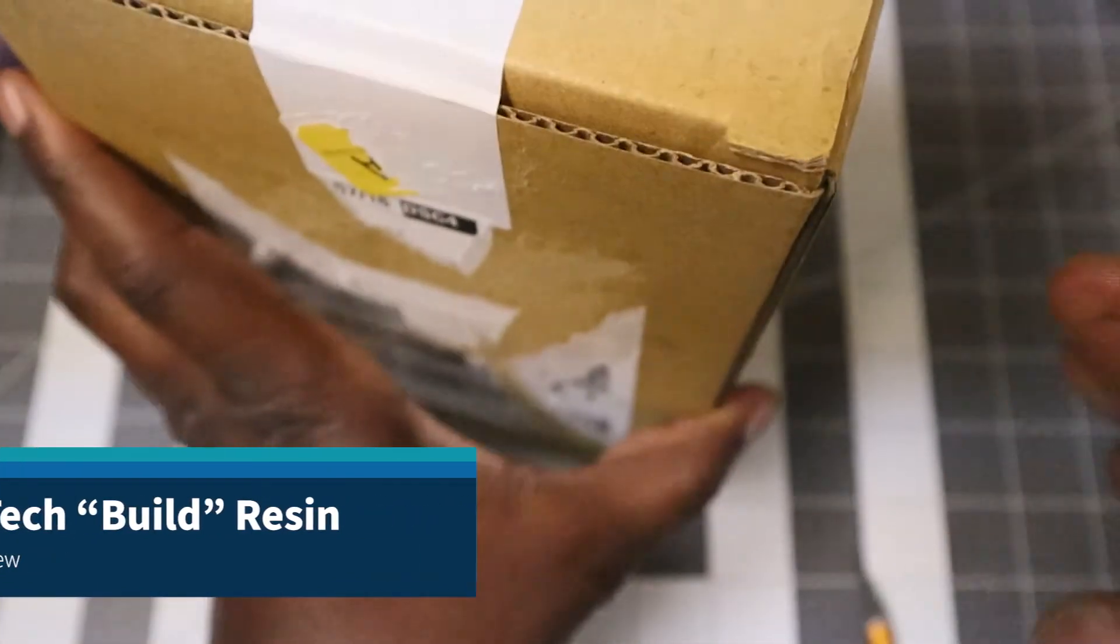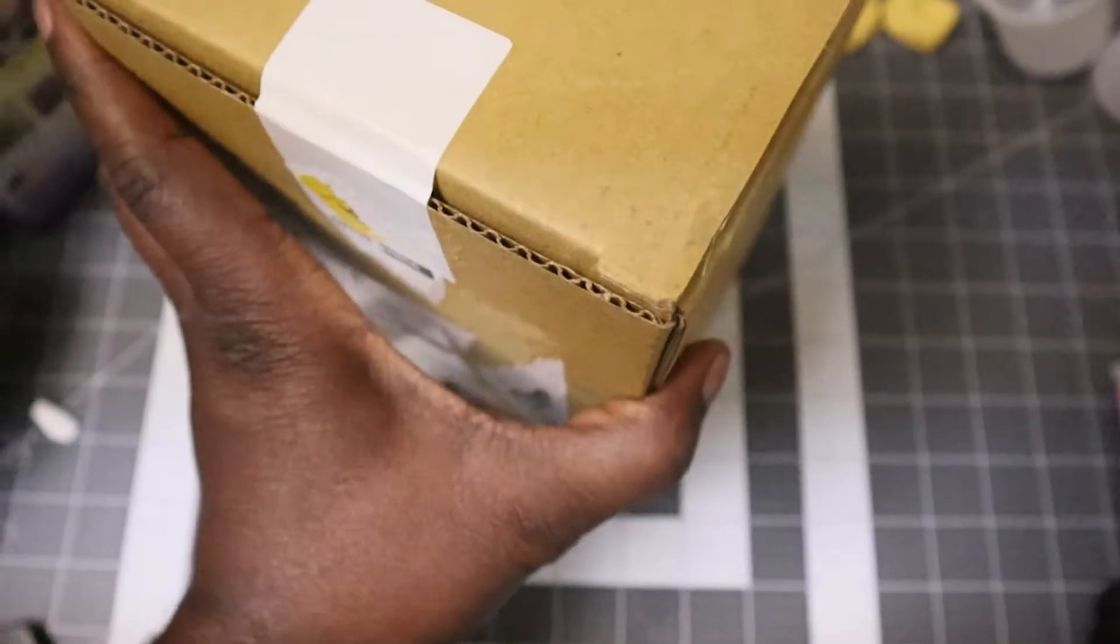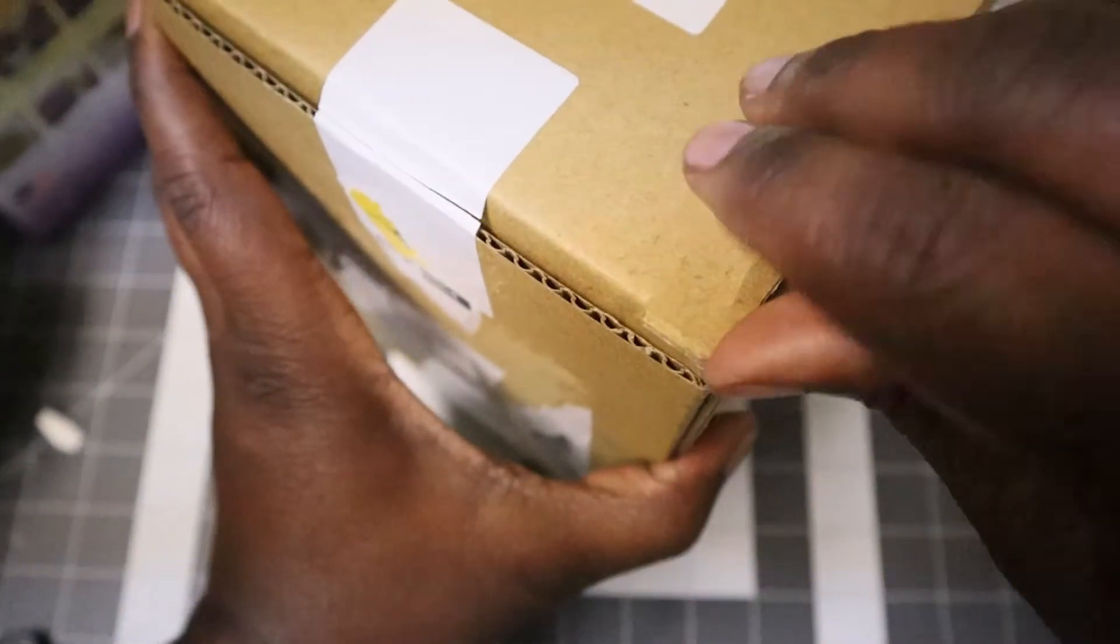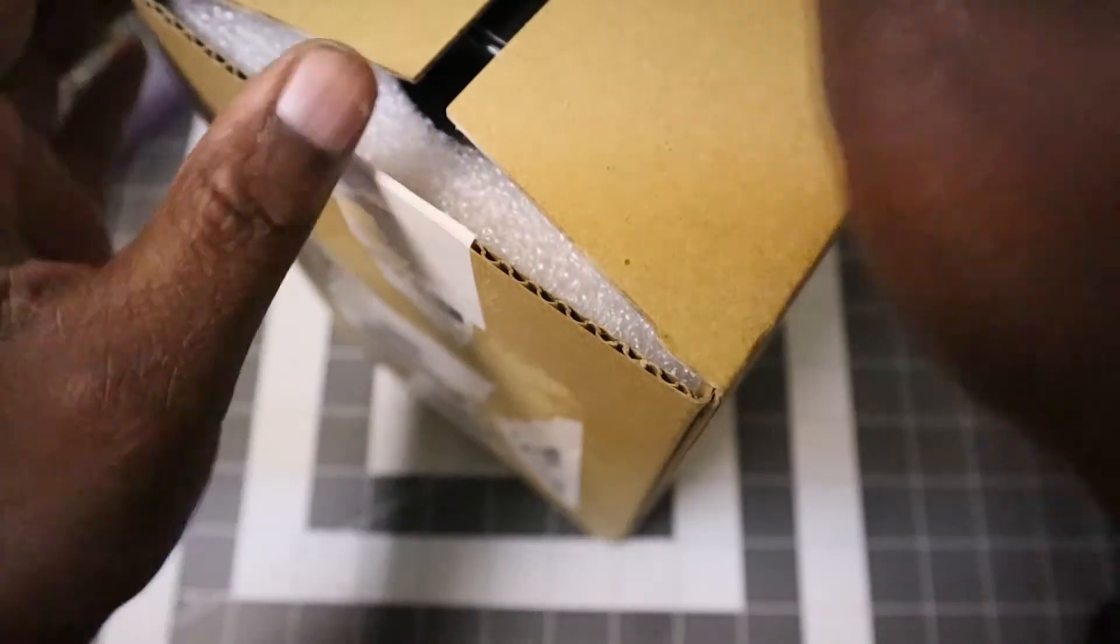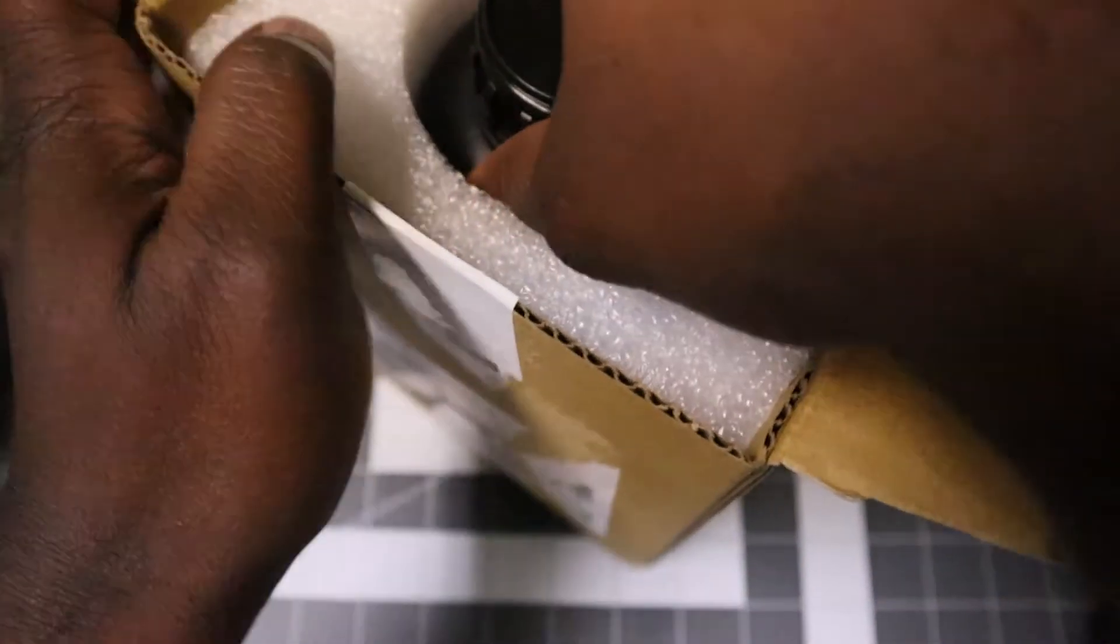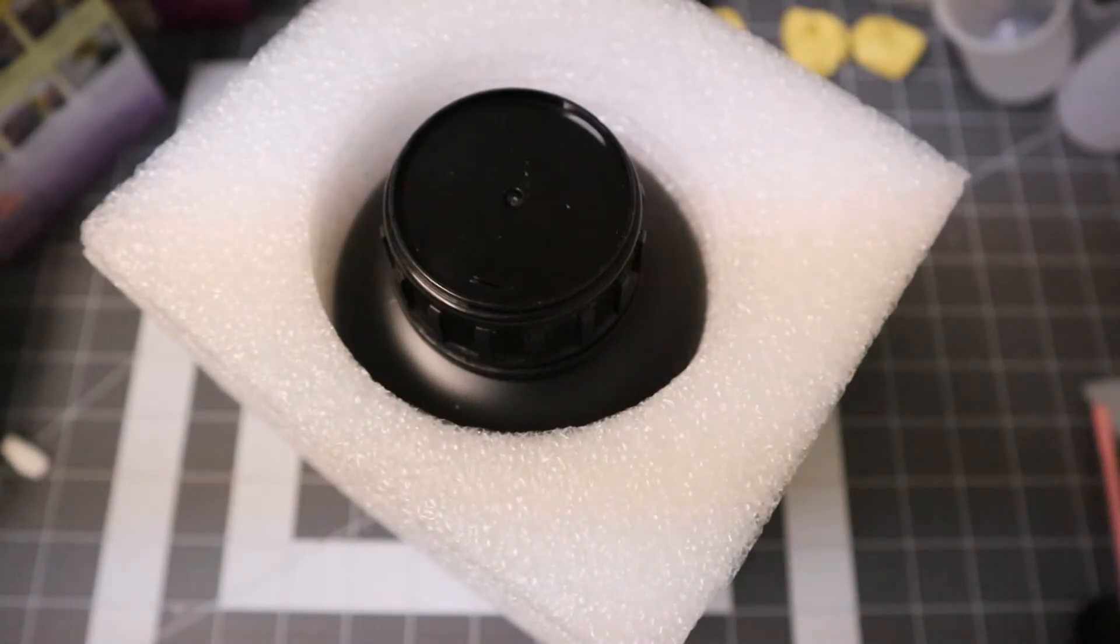Hello everybody, welcome back. Today we're taking a look at a brand new product from Siraya Tech, their Build resin in smoky black. In typical Siraya Tech form, the Build resin comes in a box surrounded by a styrofoam insert that perfectly cushions the bottle. I really like their packaging although it can be a little tricky to get out sometimes.